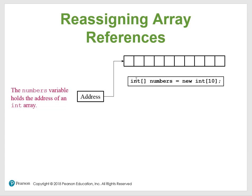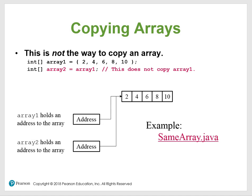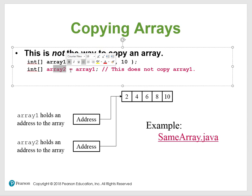When you reassign the array, the number variable now holds the address of the new int array. The old 10-element array gets marked for garbage collection, and this is the new address stored in number. Now, for copying arrays — you can't just do array one equals array two like that. It doesn't copy. You have to use a reference parameter to hold that array reference address to actually copy the array.